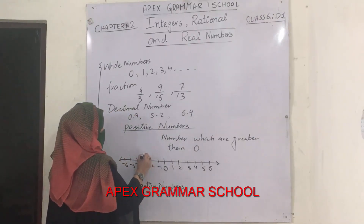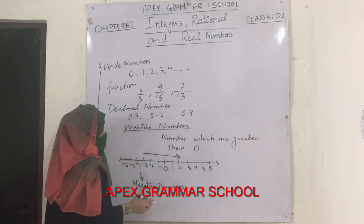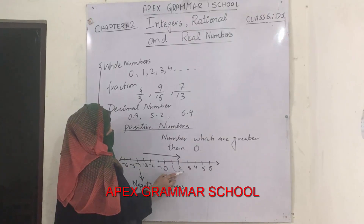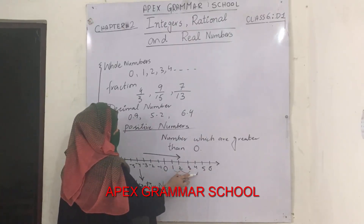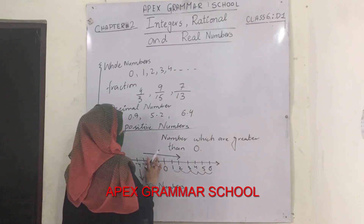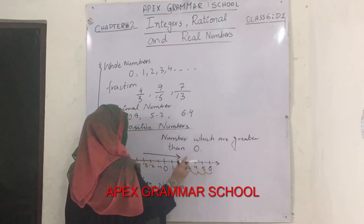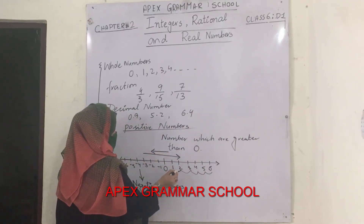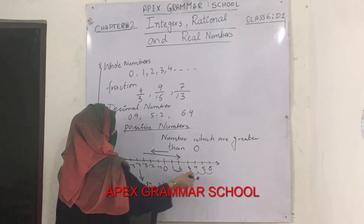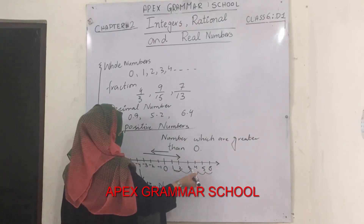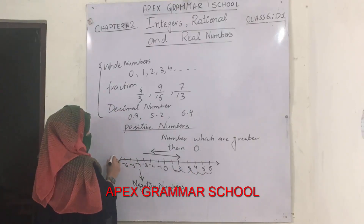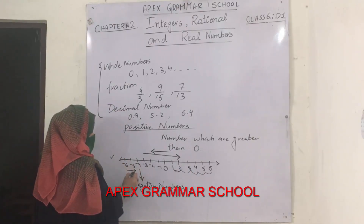When you move from left to right on the number line, you will see the numbers are increasing continuously. 2 is greater than 1, 3 is greater than 2, 4 is greater than 3, 5 is greater than 4, 6 is greater than 5. When you go towards the right, numbers are increasing. But when you move towards the left, numbers are decreasing.